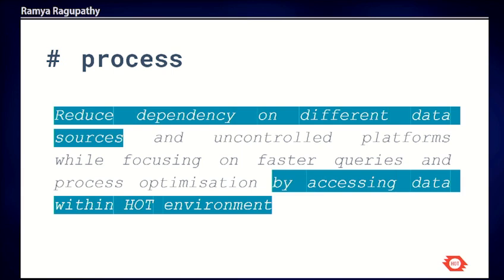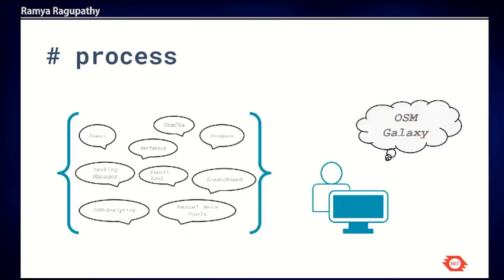How do we want to increase accessibility and ease of use for OSM data output? We want to reduce the dependency on multiple data platforms. OSM is a thriving ecosystem with lots of tools to derive different kinds of data outputs. We want to reduce that dependency and instead provide all of this data in an easy-to-use format through Galaxy.